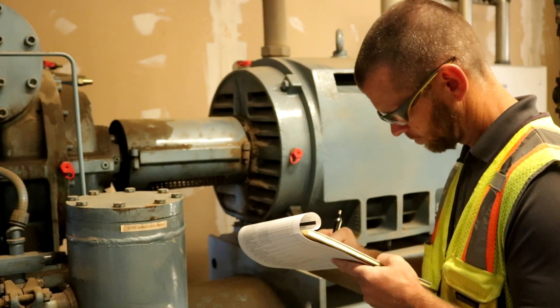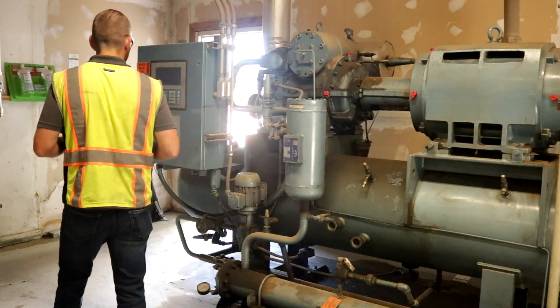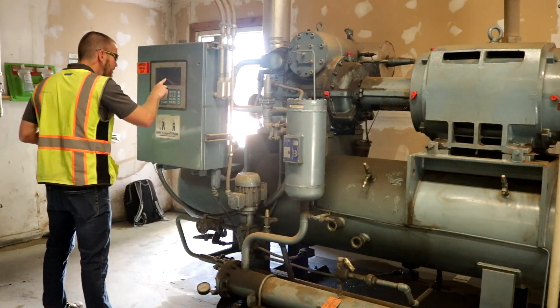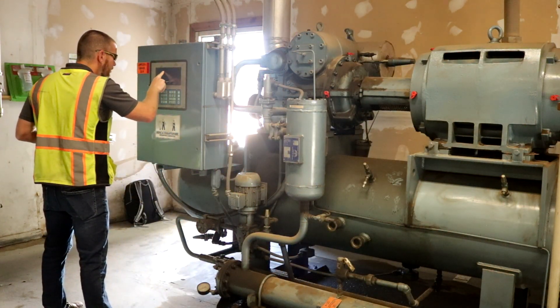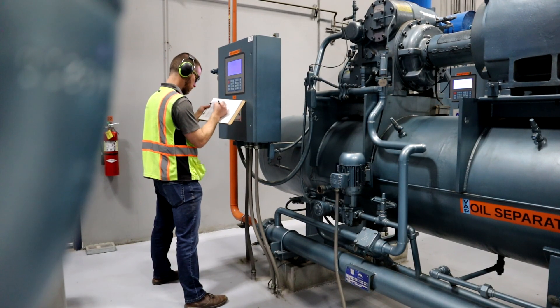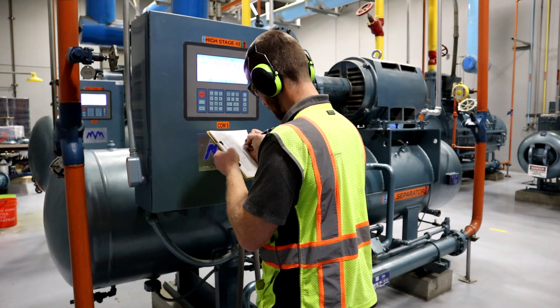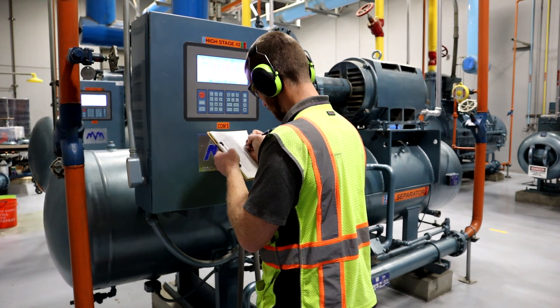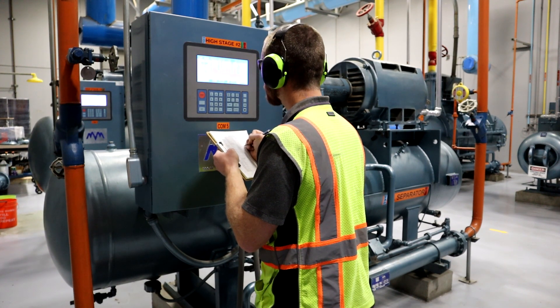As a result, refrigeration systems with very low evaporator temperatures cannot operate efficiently using a single stage of compression. Engineers address this by employing a two-stage system in which compression is divided between two different compressors that are in series with each other.